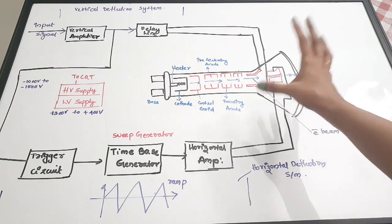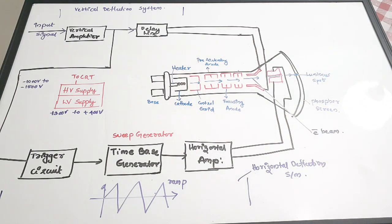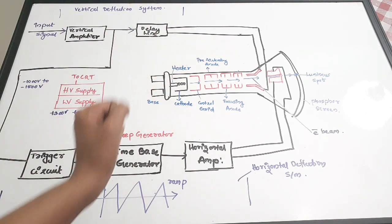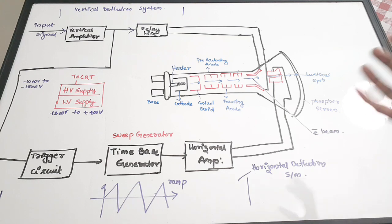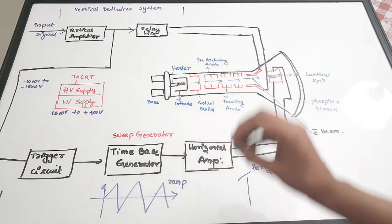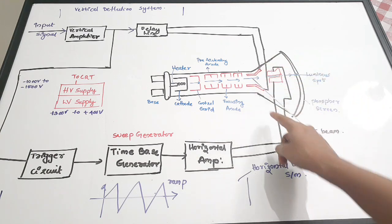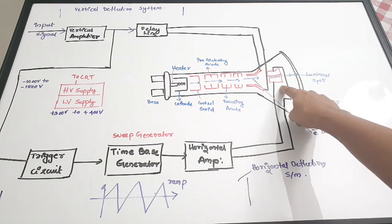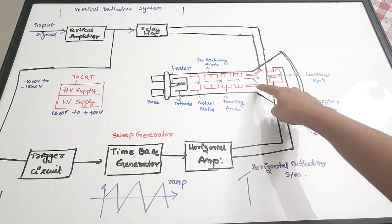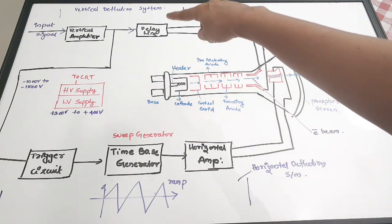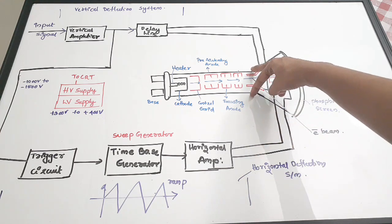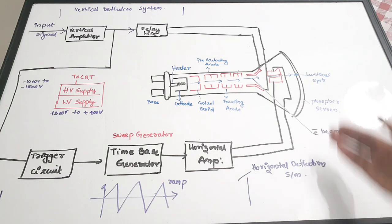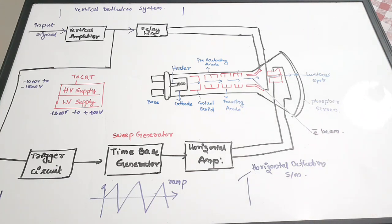The cathode ray tube is the heart of the CRO. It is a vacuum-sealed glass envelope containing an electron gun, a set of anodes, two sets of deflection plates — vertical and horizontal — connected to their respective deflection systems, and a phosphor-coated screen.